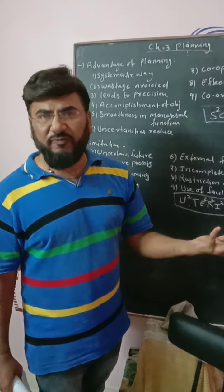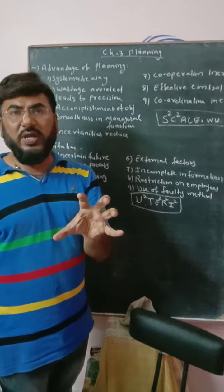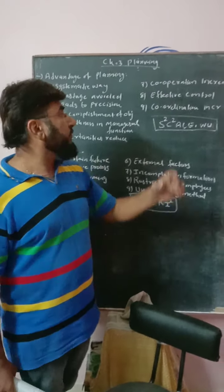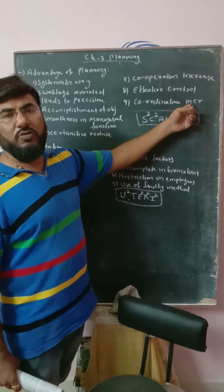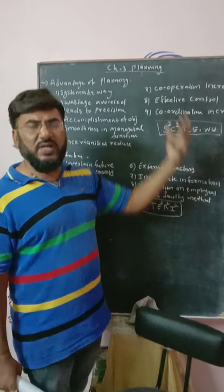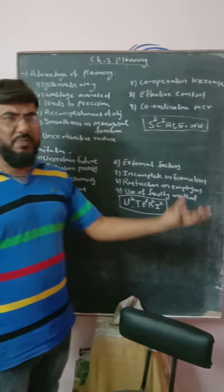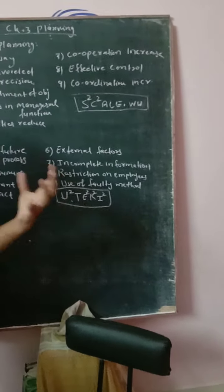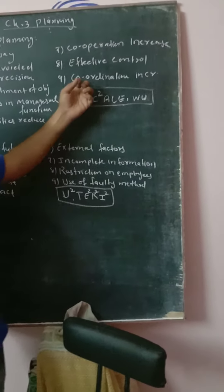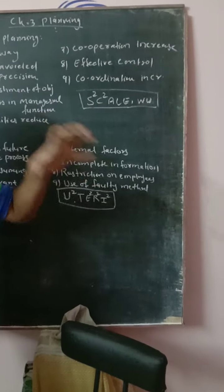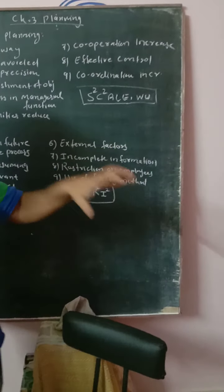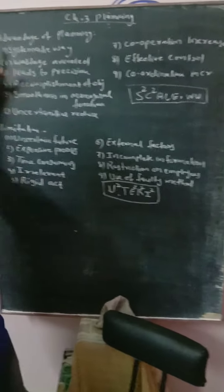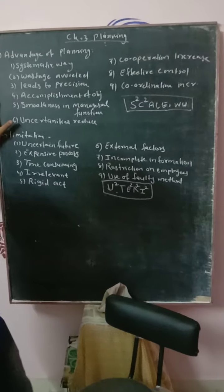Proper controlling allows you to check what was planned versus what is actually happening. Coordination also increases — among workers, departmental heads, and all activities — because with planning, everything is decided in advance: what work needs to be done. These are the advantages of planning.